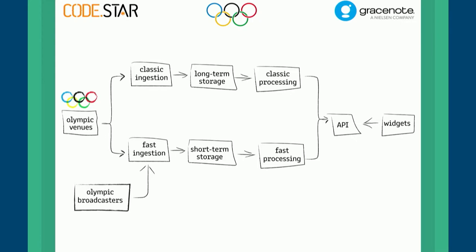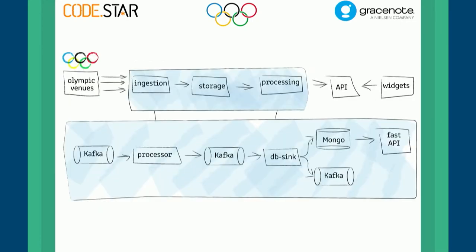You guys can probably guess what this fast pipeline looked like. Instead of putting stuff directly on the file system, we let Kafka put it on its file system. From that point onwards we used basically Kafka Streams to process these updates, join together data, aggregate stuff, do all kinds of processing, and map IDs to IDs that were relevant in the GraceNode database. And once that processing has been finished, the data in a pre-processed manner is being put on another Kafka topic, which is then synced to a MongoDB database, which can then be leveraged by a faster API.